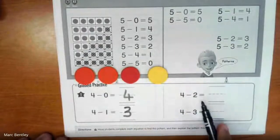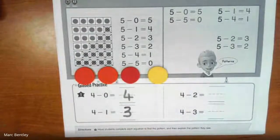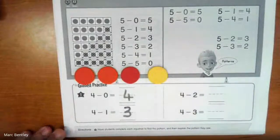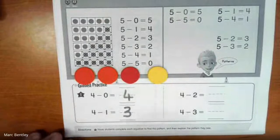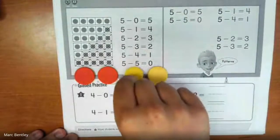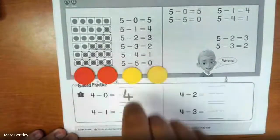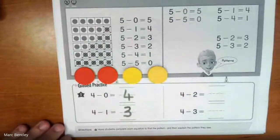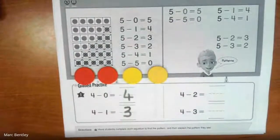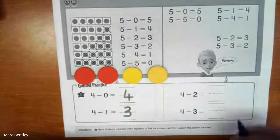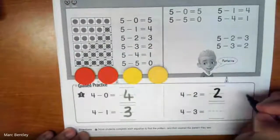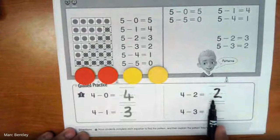If I move across to here, you can see it says 4 minus 2. So all I'm going to do is flip one more red counter. So how many reds am I left with now? So as you can see, now I'm left with 2. So 4 minus 2 equals 2.